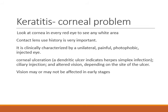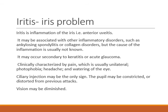Another very common exam scenario is keratitis or a corneal problem. The main clues are a young patient who normally wears contact lenses presenting with unilateral painful red eye associated with intolerance to light. Vision may or may not be affected in early stages, but it is a potentially blinding condition. On examination, there may be a white area in the cornea, which is an ulcer or corneal infiltrate. The most important clue is a history of contact lens use.